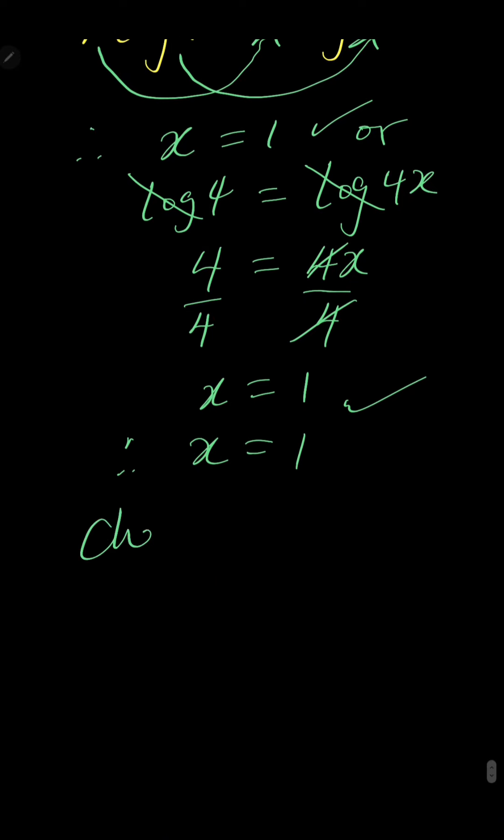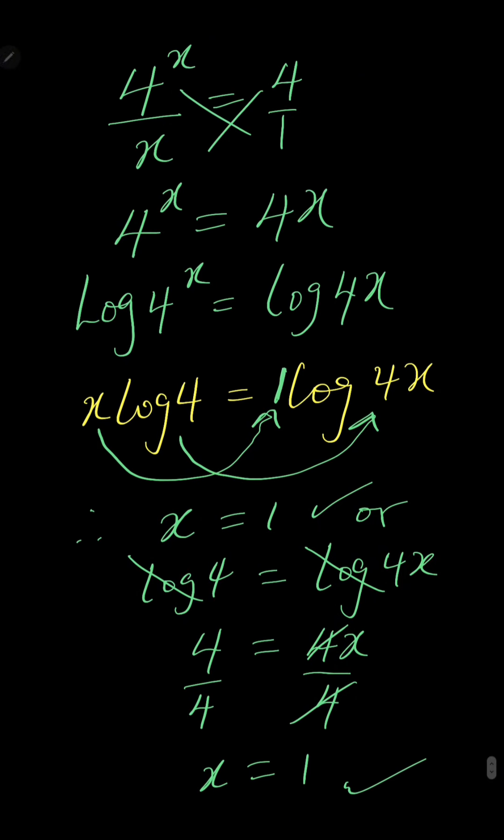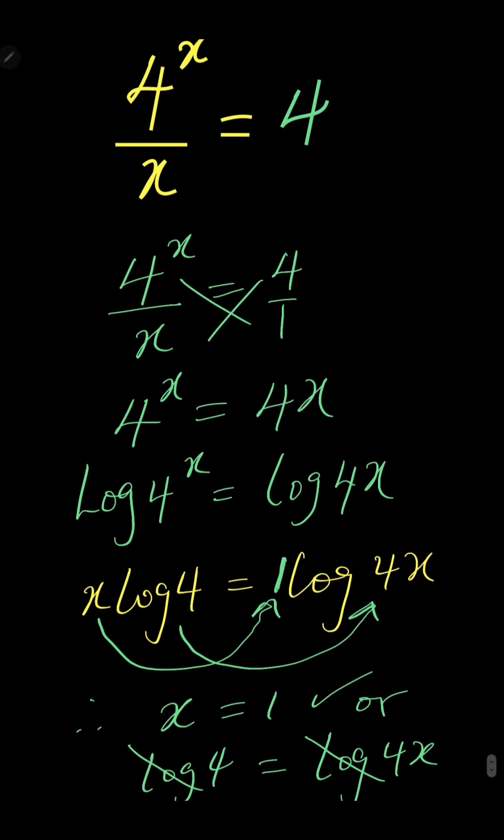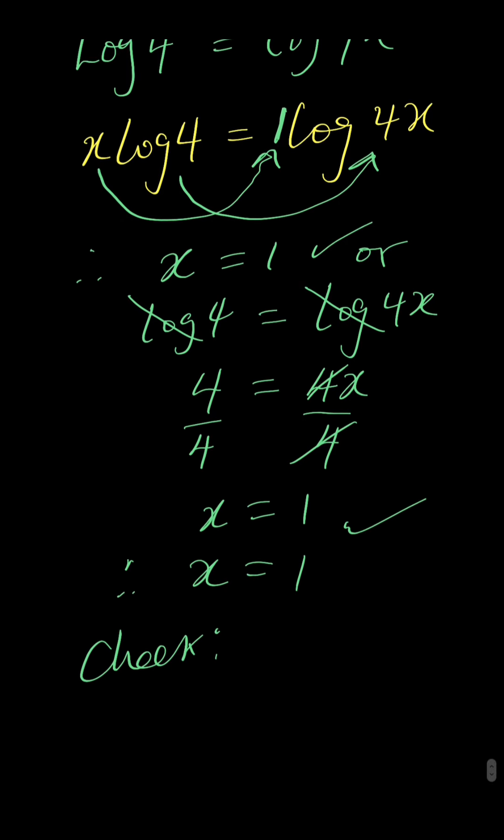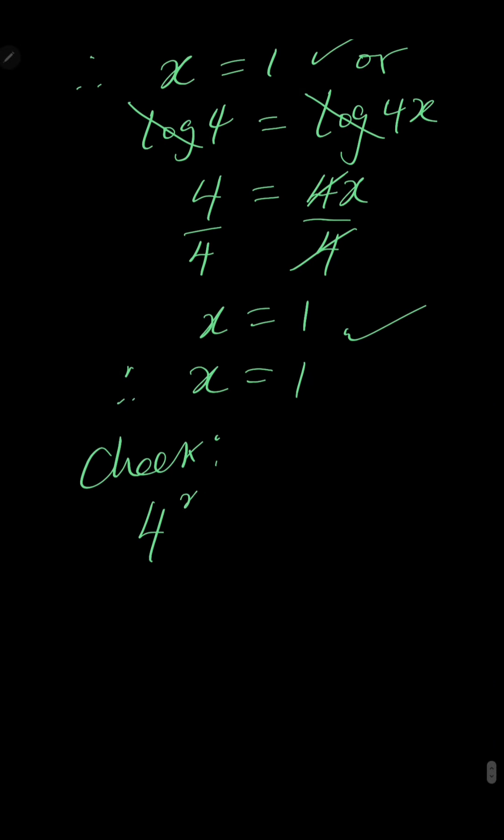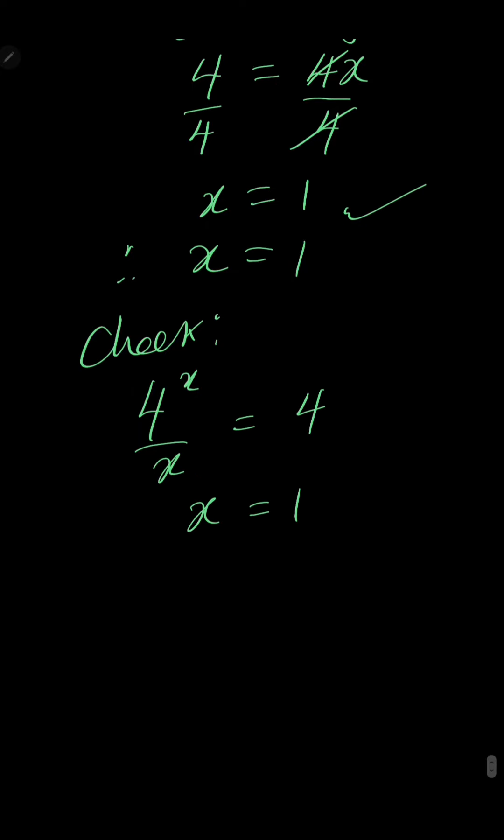Now let's check if what we've done is right. Remember, the equation says 4^x / x = 4. Now, we've solved that x is 1. So that would be 4^1 / 1. Will it give us 4?